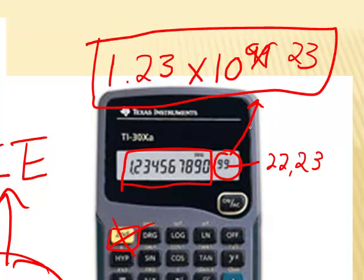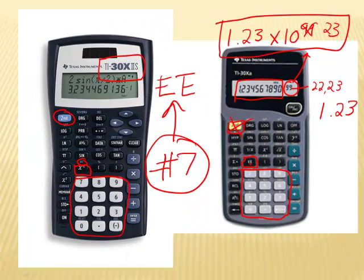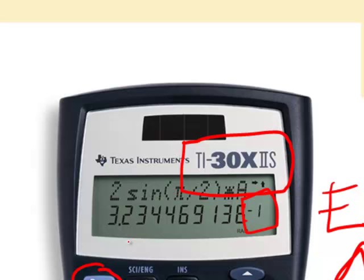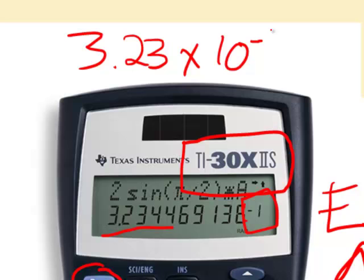If I just put 1.23, then that's going to be wrong. So just be on the lookout for that and just be on the lookout. I think this is how this one reports it over here, scientific notation. So it'll be like 3.23 times 10 to the negative first. Just be on the lookout for that, and that's how your calculator reports it.